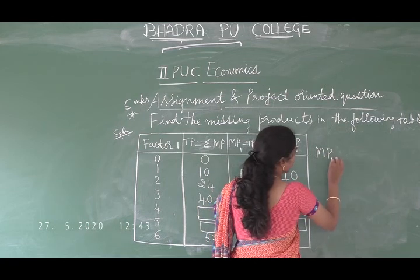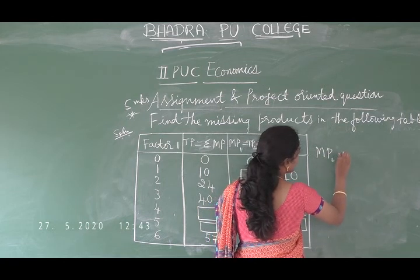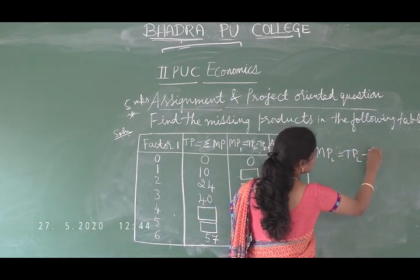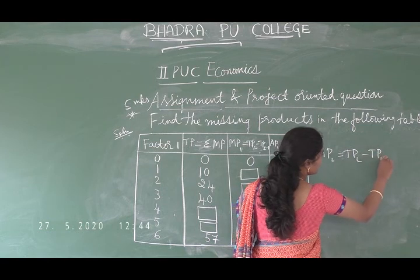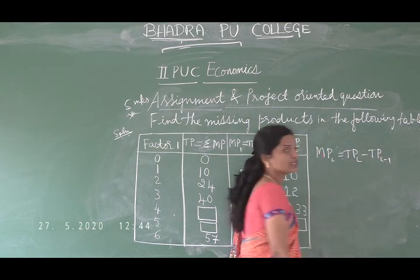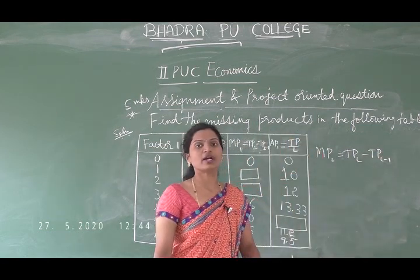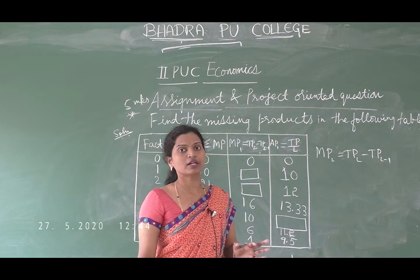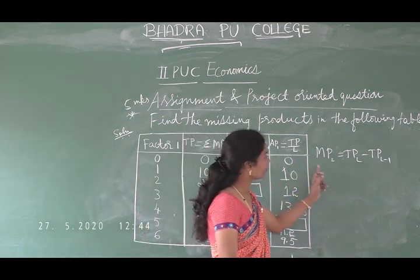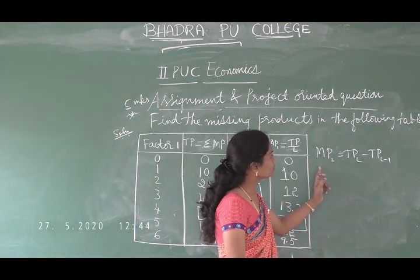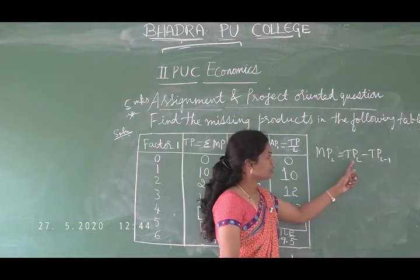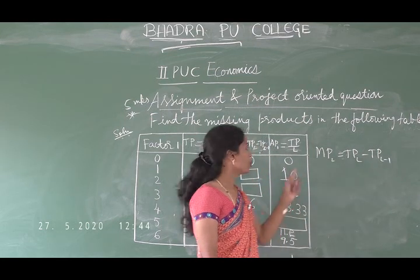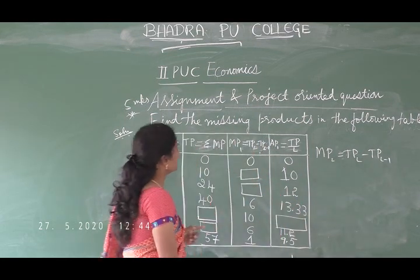To calculate marginal product: MP(L) = TP(L) − TP(L−1). When the input factor is 1, TP(L) = 10 and TP(L−1) = 0, so MP = 10 − 0 = 10.